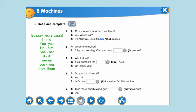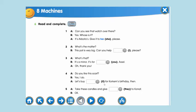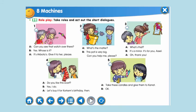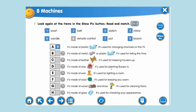Жалпы ауызша айтып өттік. Енді жазбаша осыны өздік. Бізден орын даймаз. Тапсырма қиын емес. I — мен, кімге? Маған. Me. You — сіз, кімге? Сізге. You — өзгерсіз. It — жансыз затқа қойылатын. It — ол, бұл да еш өзгерсіз, it болып жазылады. They — олар, кімге? Оларға. Them. Өзгерсіз.